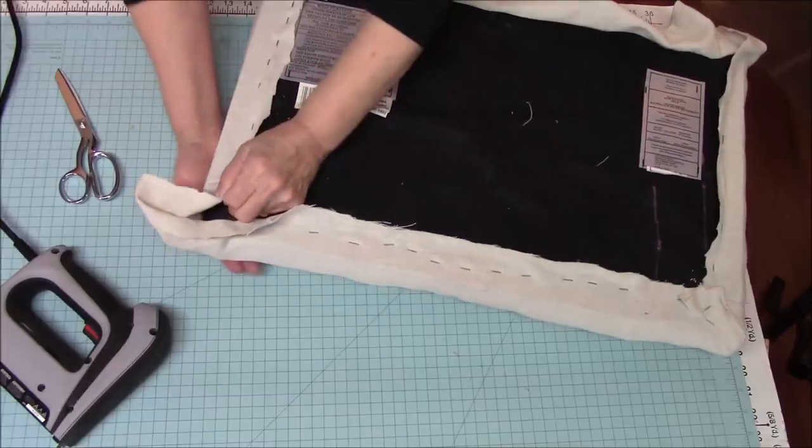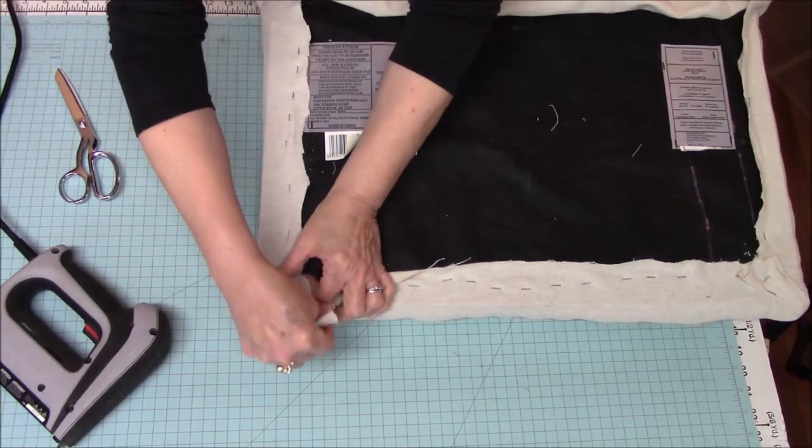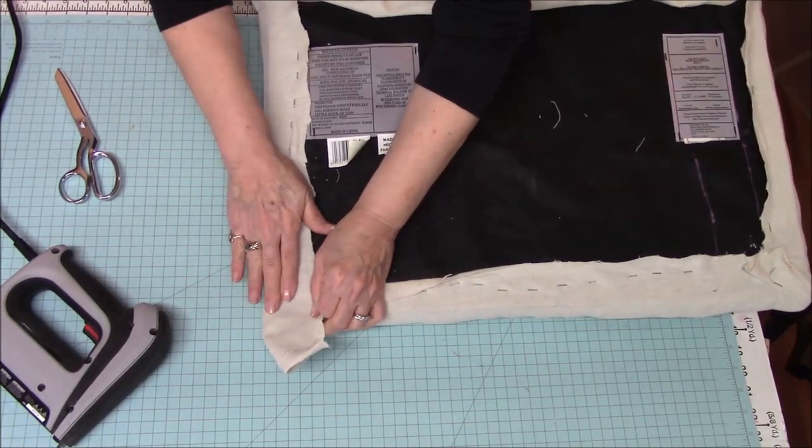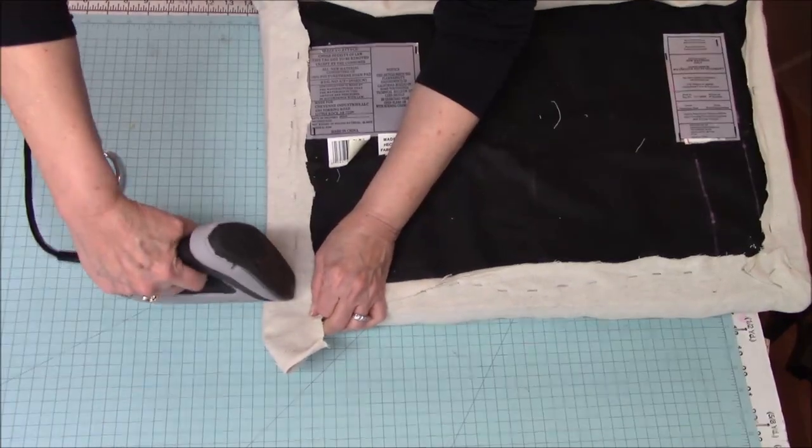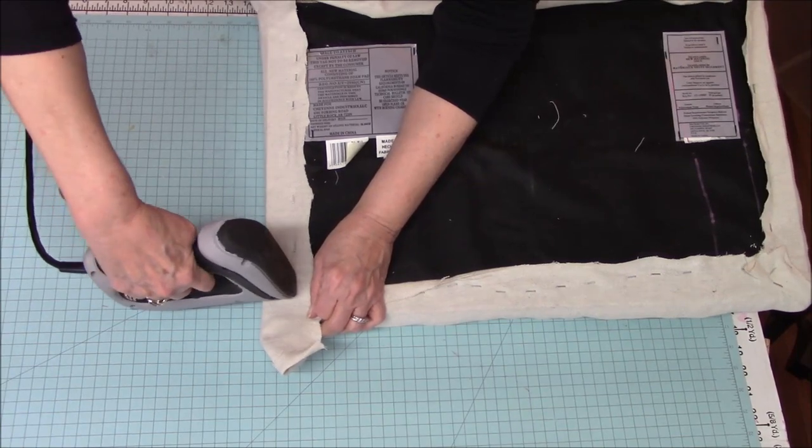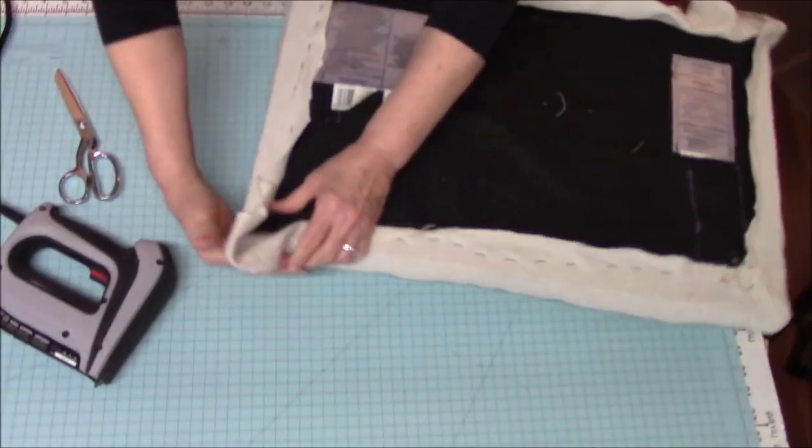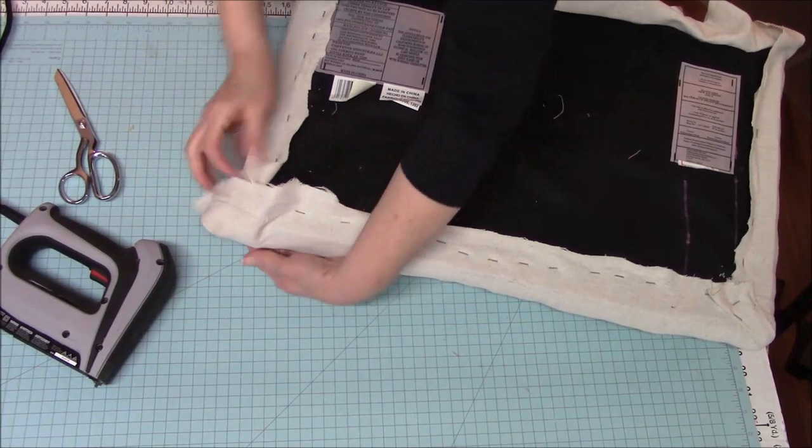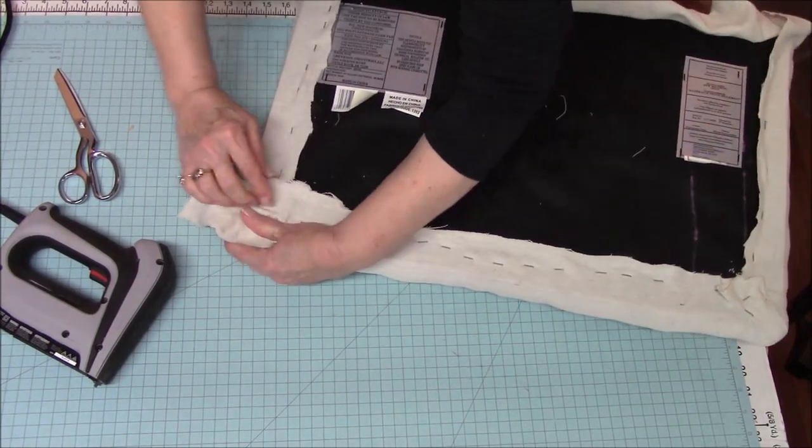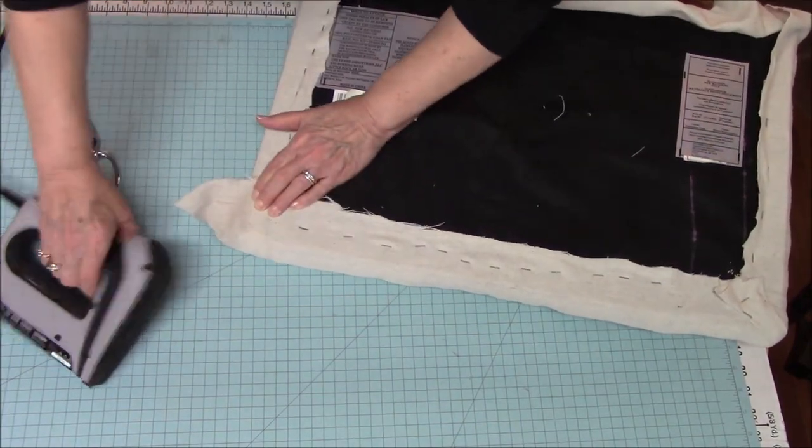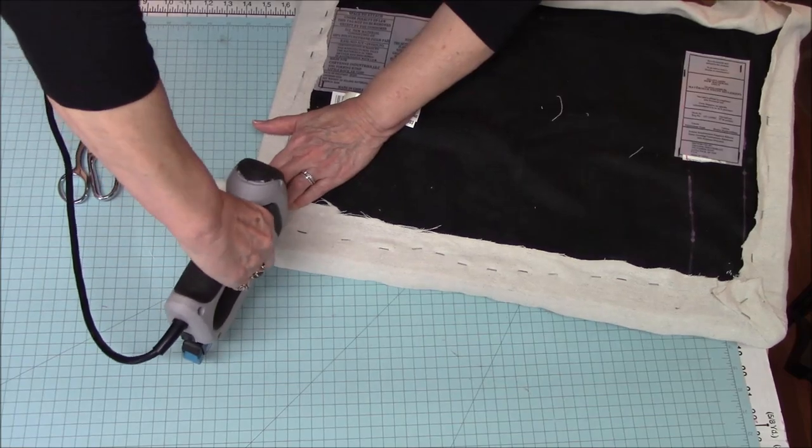I'm going to pull this around where it's smooth, staple almost to the corner but not quite, and then do the same thing on this side. Pull almost to the corner but not quite. Make sure I don't staple my fabric.